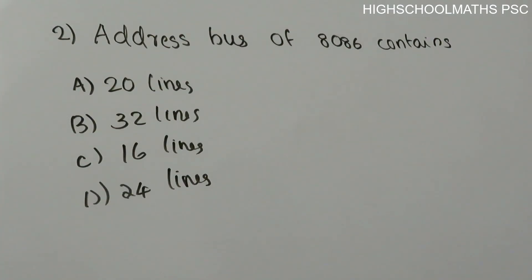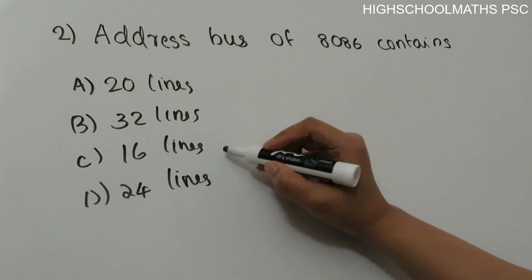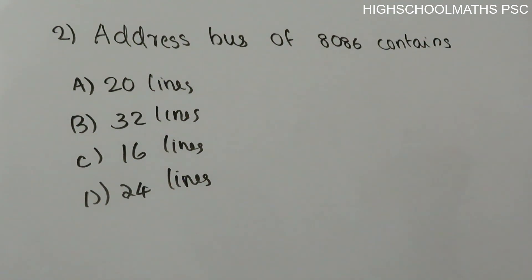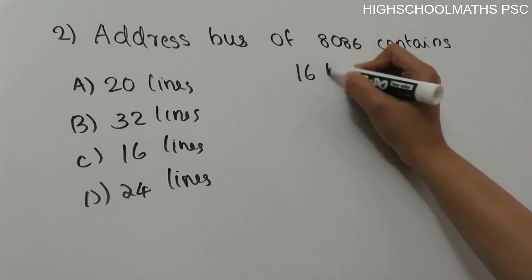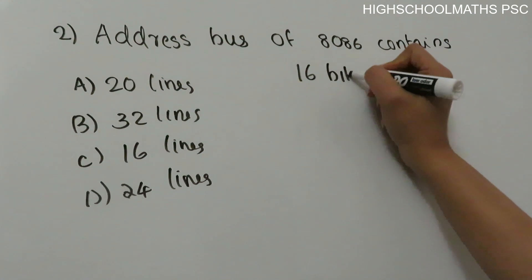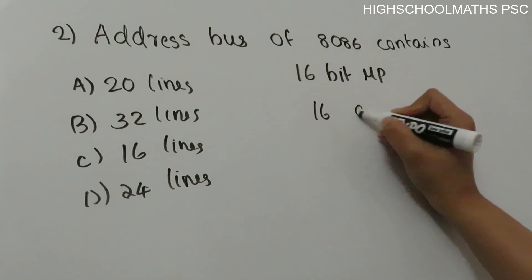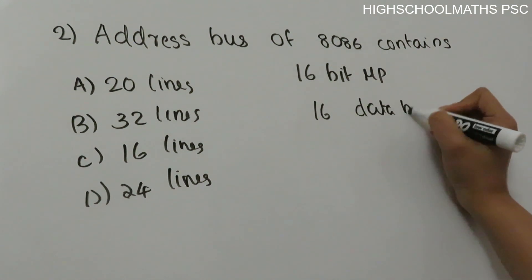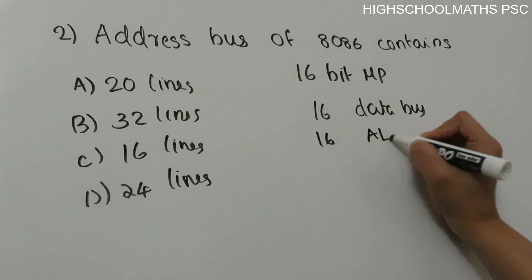Second question: the address bus of the 8086 contains — Option A is 20 lines, Option B is 32 lines, Option C is 16 lines, Option D is 24 lines. The 8086 is a 16-bit microprocessor, so it has a 16-bit data bus and 16-bit ALU.